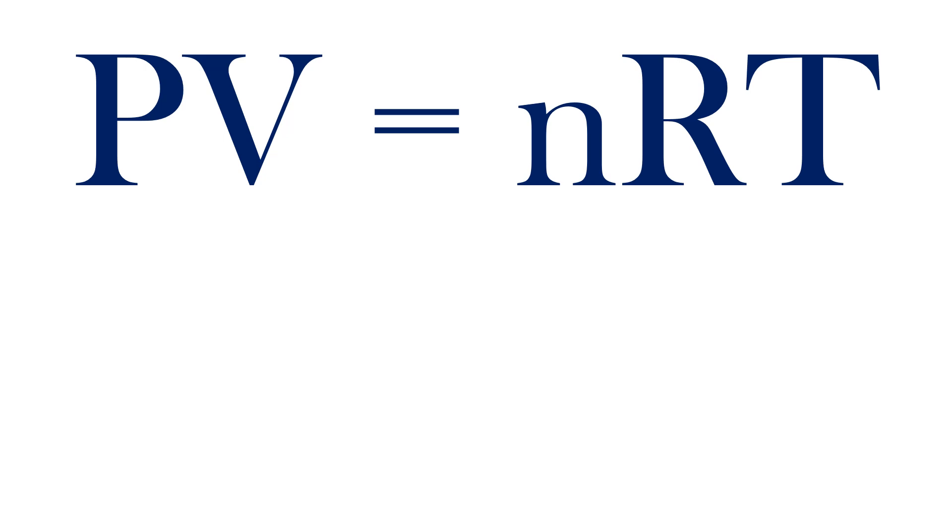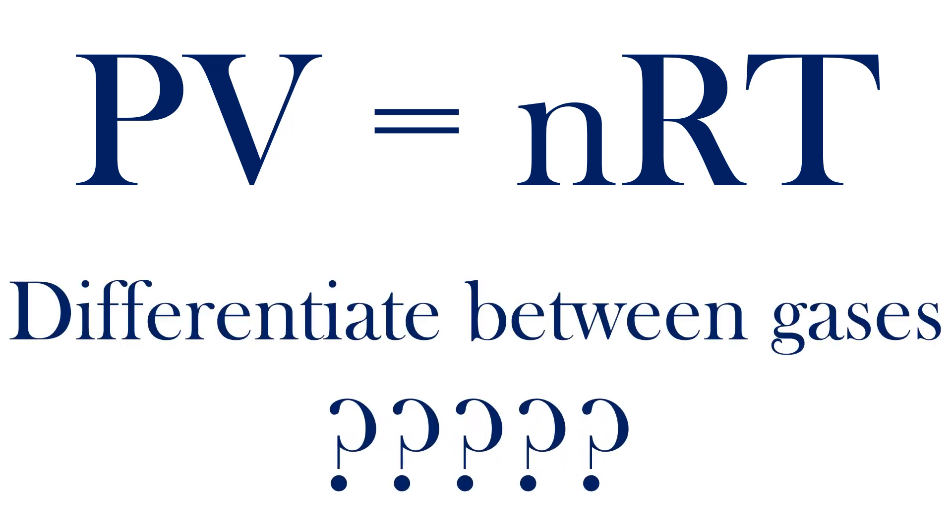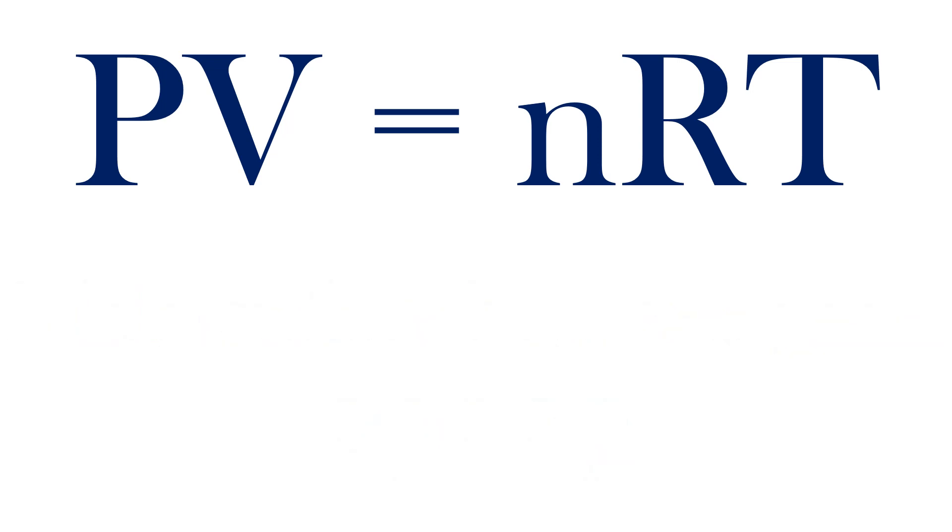But if all gases behave ideally under these conditions, how can we differentiate between gases? The answer is knowing the density of the gas.